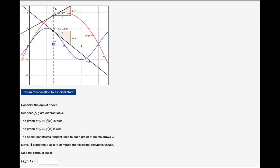In this video I'm going to give you a hint so you can complete this problem. Suppose f and g are differentiable. The graph of y equals f of x is in blue here. The graph of y equals g of x is in red here.